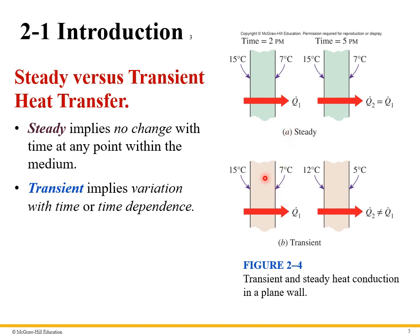On the other hand, in the case below with a tan-colored wall, the temperature difference changes. At 2 p.m. it's 15°C on one side and 70°C on the other, but by 5 p.m. it's changed to 12°C on one side and 5°C on the other. Therefore the heat transfer through the wall is different at those two times, so this heat transfer is a function of time — we call that transient.